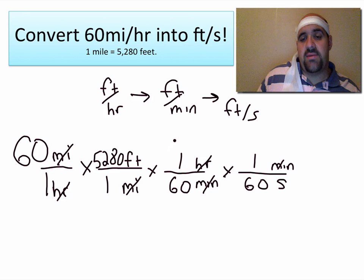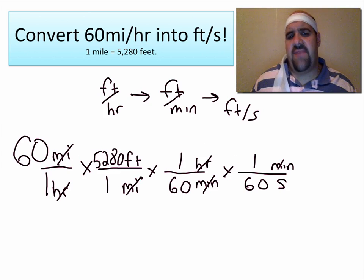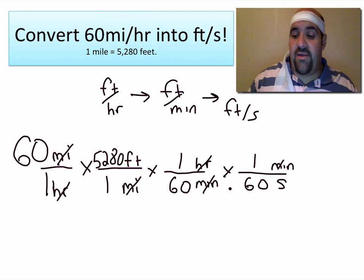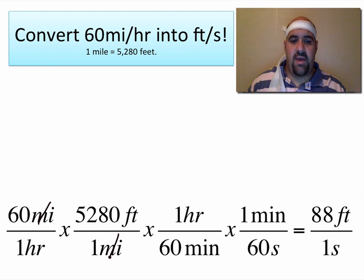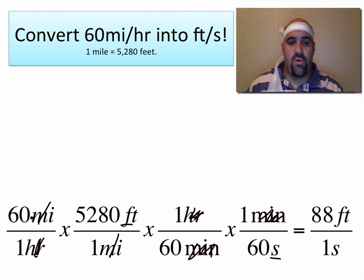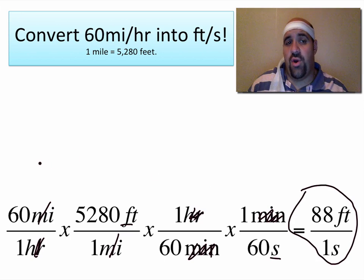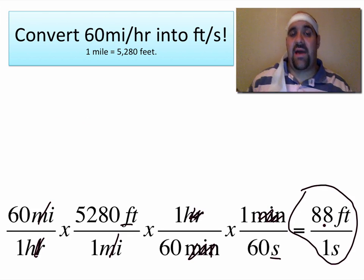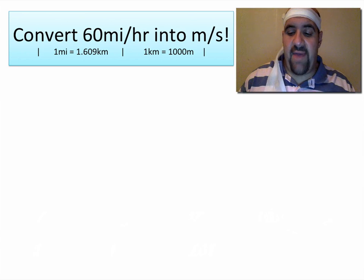Now you multiply across: 60 times 5,280 times 1 times 1, divided by 1 times 1 times 60 times 60. Miles cancels with miles, hour cancels with hour, minute cancels with minute, and we are left with feet per second. When you multiply across and divide by 60 twice, you end up with 88 feet per second. So if you're on a highway going 60 miles per hour, every single second you travel 88 feet. That's how we convert speeds from one unit into another.